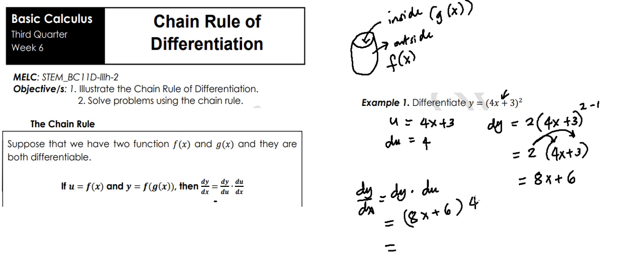Again, distribute the 4 that's outside our quantity or parenthesis to each term inside the parenthesis. So we have 8x times 4 that is 32x, plus 6 times 4 that is 24. So this is our answer.